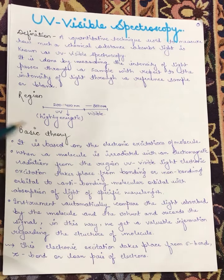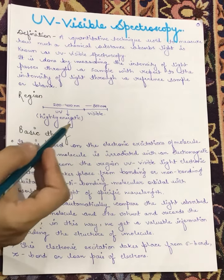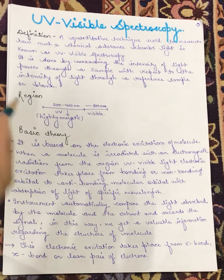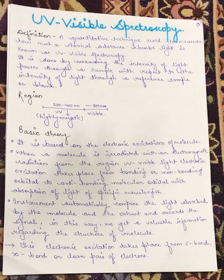The spectral region included in UV-visible spectroscopy is 200 to 400 nanometers for UV radiation, and 400 to 800 nanometers for the visible region. The 200 to 400 nanometer UV region is highly energetic.